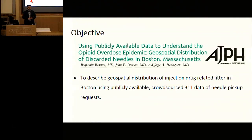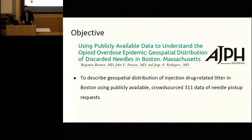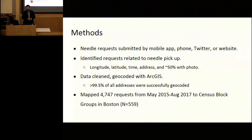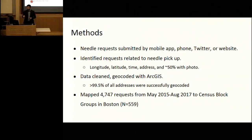311 is a non-emergency public response system for things like power outages and water main breaks. Starting in 2015, Boston layered on a way to report discarded needles, with someone from AHOPE needle syringe exchange picking them up within 24 hours. Requests could be submitted by mobile app, phone, Twitter, or website. Using this publicly available dataset, we identified needle pickups, though a lot was miscoded and had to be re-geocoded using ArcGIS. We ultimately mapped almost 5,000 needles from 2015 through August 2017, mapping them back to census block groups of approximately 3,000–5,000 individuals.